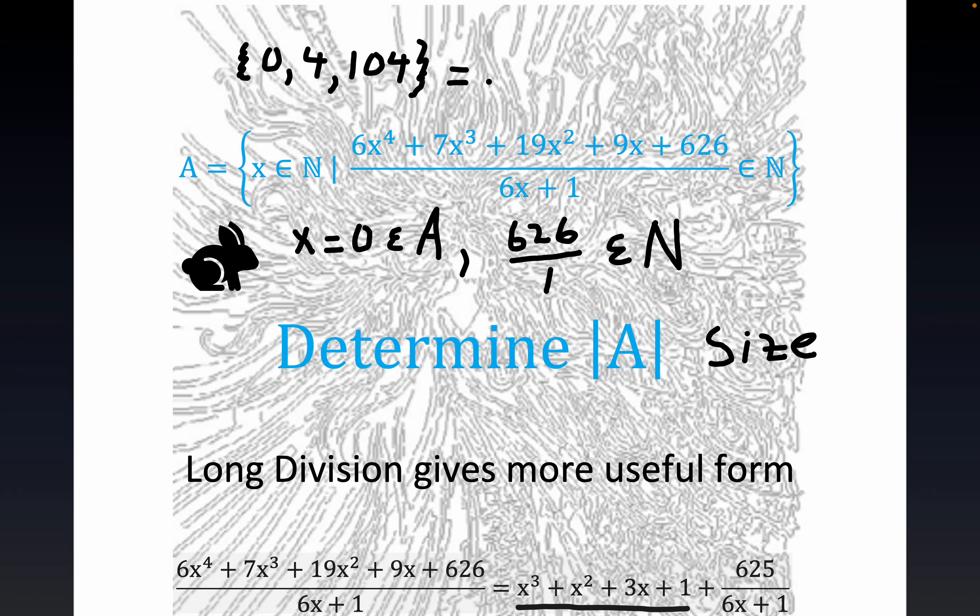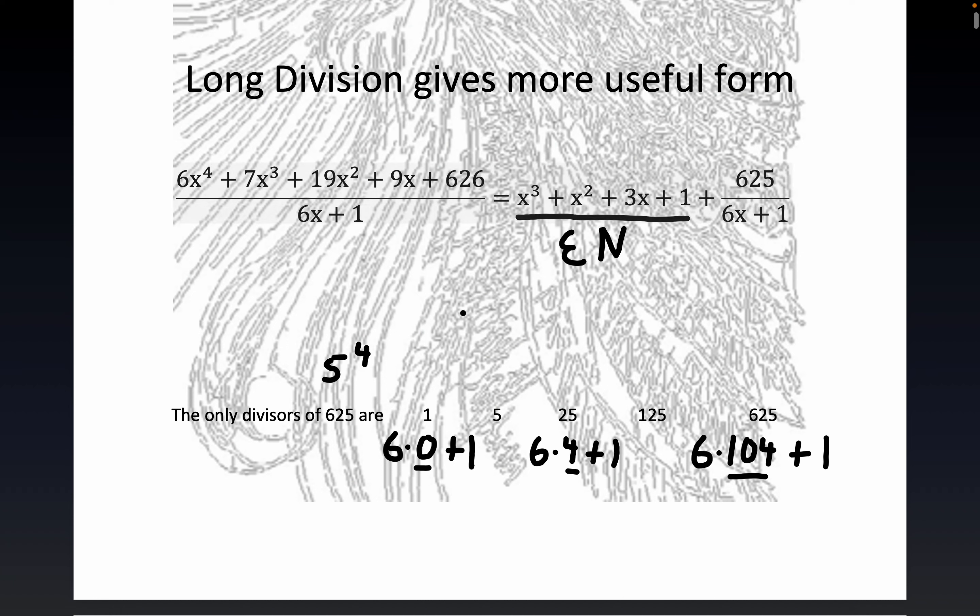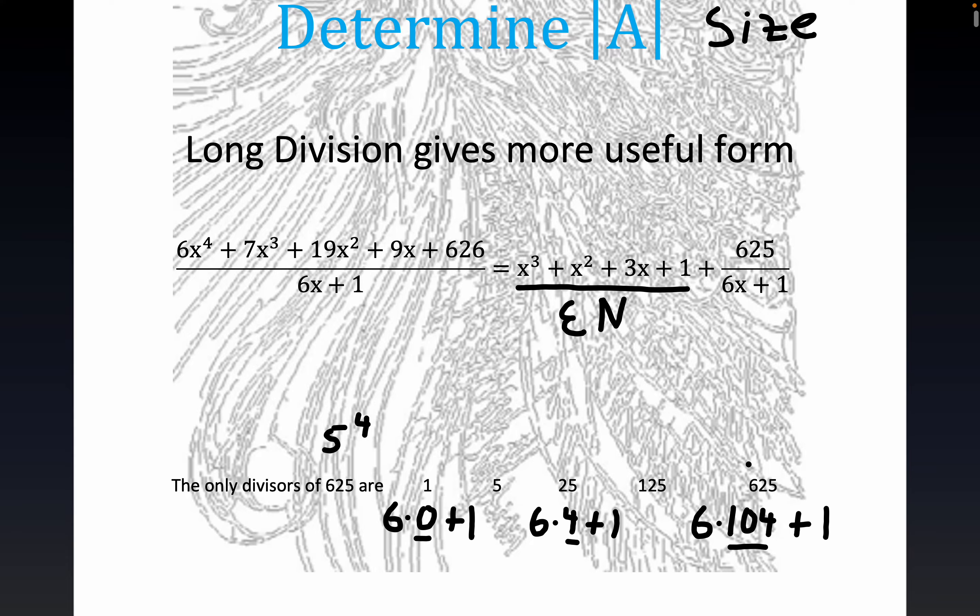And again folks, I'm just double checking. We got 0, 4, and 104 in this form 6x plus 1. And those are equal to the divisor. So this part here would have to resolve to an integer in these three cases. In these three cases, this part would resolve to an integer, and the whole thing would be equal to an integer, a natural number in the case 0, 4, and 104.